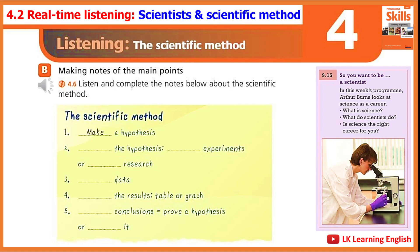Then, they display the results in a table or graph. They draw conclusions. Conclusions are what you learn from an experiment. The hypothesis is proved or disproved. Does this sound interesting to you? Is science the right career for you?